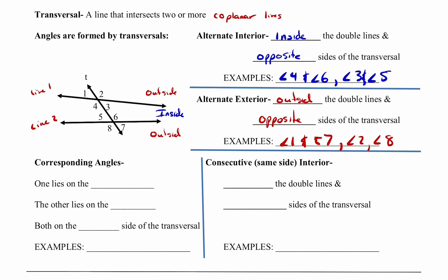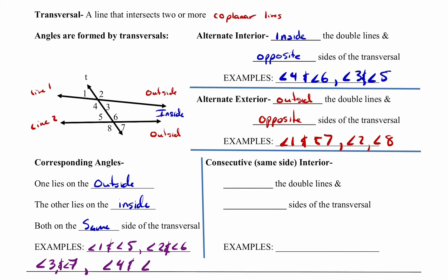We also have corresponding angles. Corresponding angles are going to have one on the outside and one on the inside, and they're both going to be on the same side of the transversal. Examples: angle one and angle five are corresponding; angle two and angle six; angle three and angle seven; and angle four and angle eight. Corresponding angles visually form an F shape — four and eight, you can see, make this F shape.